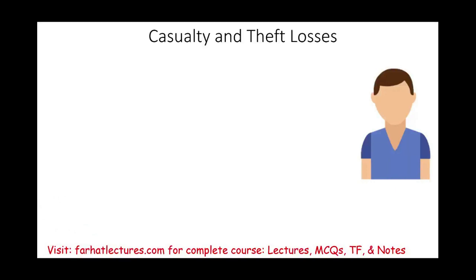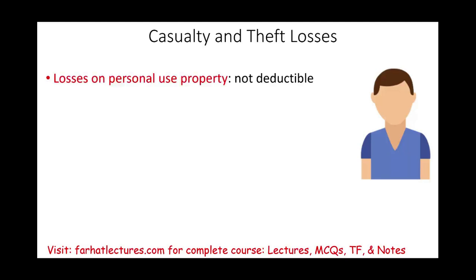Hello and welcome to this session in which we will discuss casualty and theft losses. Now bear in mind, any losses incurred on personal use property — what's personal use property? You might own a vehicle and use it to commute to work, take your kids on vacation, go grocery shopping, or use it for your own enjoyment. That's personal use property. Any losses incurred on personal use property are not deductible.